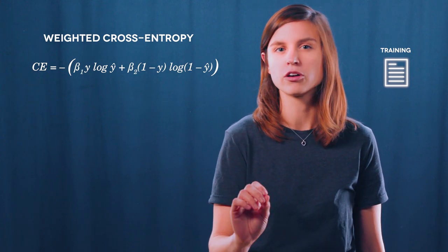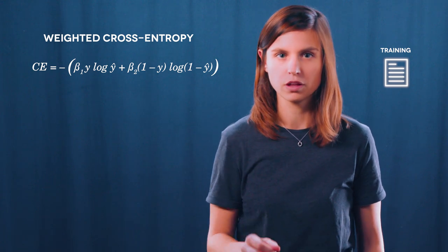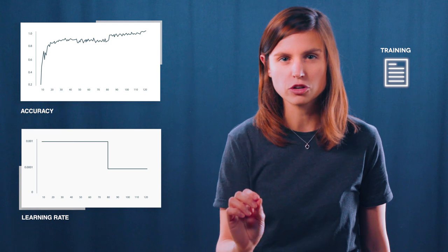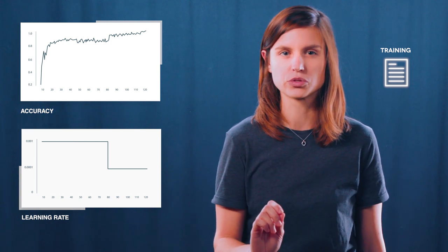Hence, a vehicle pixel correctly classified is more rewarding than a background one. Also, when the training does not progress anymore, decreasing the learning rate will allow the network to slightly adjust its parameters. Once again, these are the other tricks, but we can do much better.